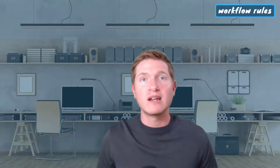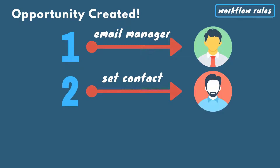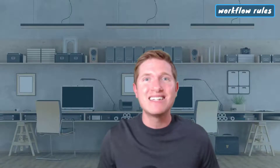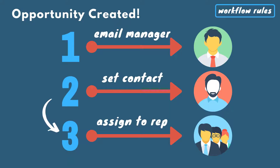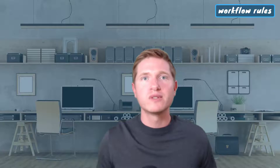Let's say that you have three rules that are triggered when an opportunity is created: one to email the manager that the opportunity was created, one to set the primary contact on the opportunity, and one to assign the opportunity to the correct sales rep. However, what if the sales rep assigned to the opportunity should be based off the primary contact that is set? This creates a problem because with workflow rules, we don't know which rule is going to take action first — setting the primary contact or assigning a sales rep. When dealing with only three workflow rules there are ways around the sequencing issue, but most companies aren't dealing with only three workflow rules.